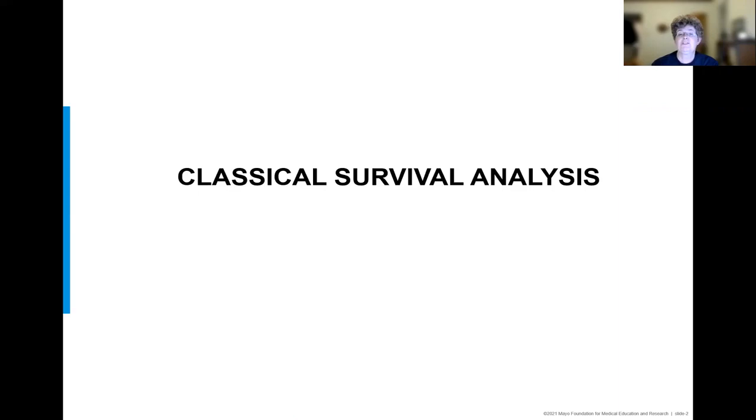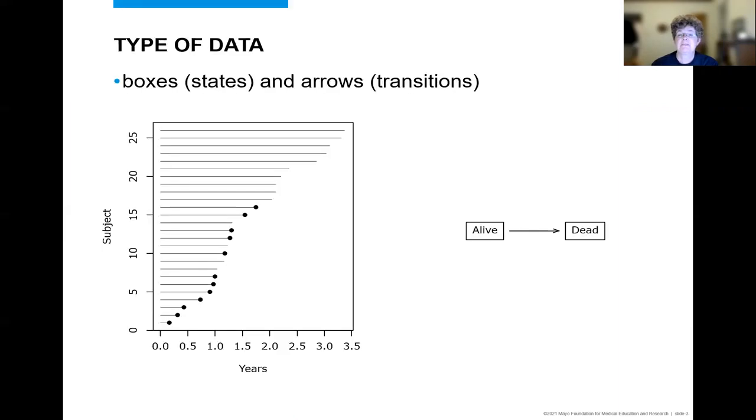First, a reminder of what survival analysis is. Survival, or time-to-event analysis, focuses on a specific type of longitudinal measurement where subjects are followed for a period of time until they have an event of interest or their follow-up is discontinued, and they are considered censored because the event has not yet been observed. The diagram on the left shows the follow-up for patients from baseline until event, where the dark circles indicate the event, and the lines without the circles are censored. Special methodology is needed to analyze this data because of the censoring.